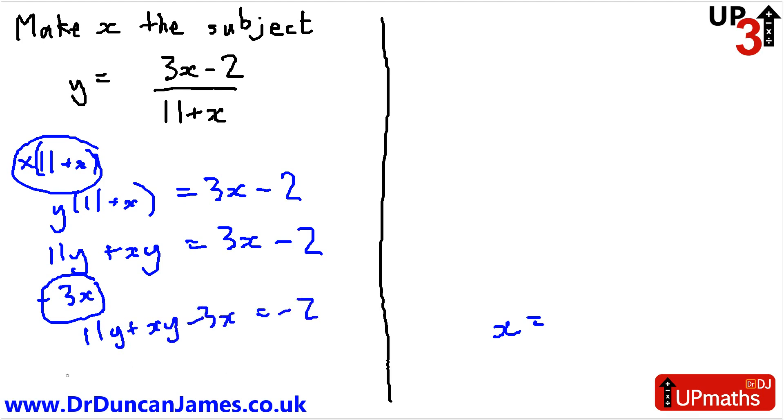So at least we've got the x's closer together, and let's just push that 11y away because we can definitely do that. At this point, I'll write that at the top of the next page: xy minus 3x equals minus 2 minus 11y. And that kind of makes sense, doesn't it? We're bringing the x's together because we want to combine them.